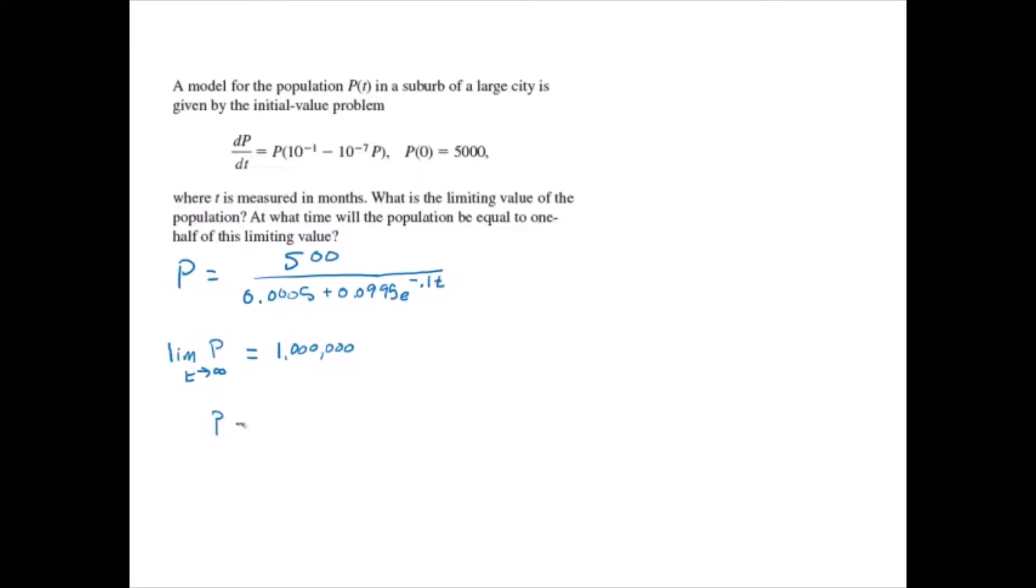If we set p equal to half of this value, which is 500,000, and set that equal to our equation, which is 500 over (0.0005 plus 0.0995e to the negative 0.1t), we get a value of t.